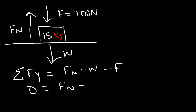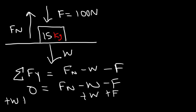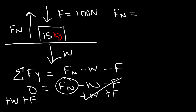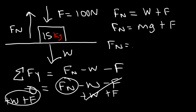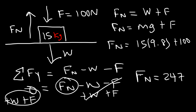Adding W and F to both sides gives us the normal force on the left side. So the normal force equals the sum of the weight force and the applied downward force: Fn = mg + F. It's a mass of 15 times gravitational acceleration 9.8, plus the downward force of 100. So 15 times 9.8 is 147, plus 100. In this example, the normal force is 247 newtons.